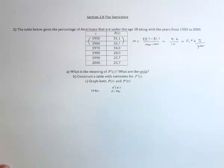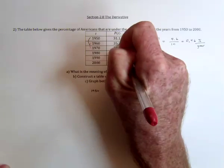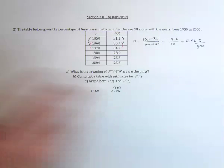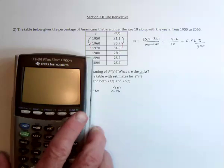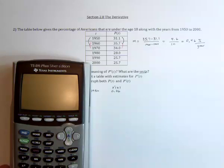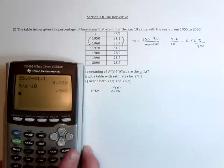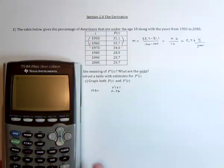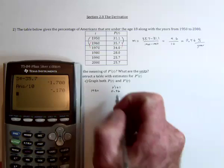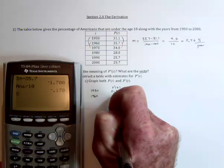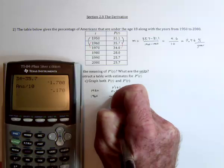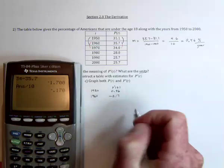Now do the 1960s. So throughout the 1960s, it would be 34 minus 35.7 and then divided by 10. They're all going to be divided by 10. And so then throughout the 1960s, it dropped by 0.17 per year.